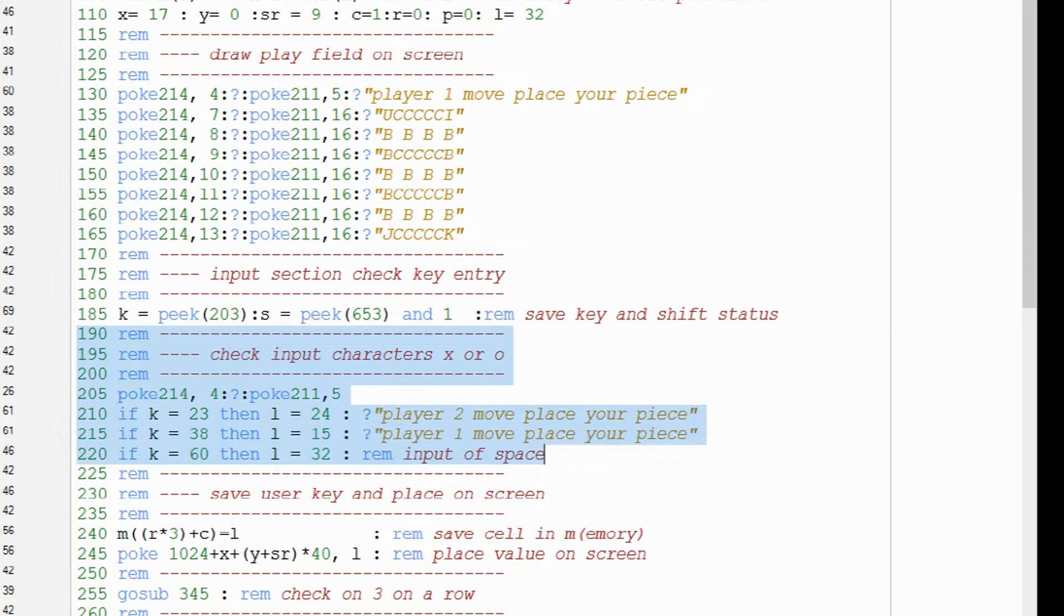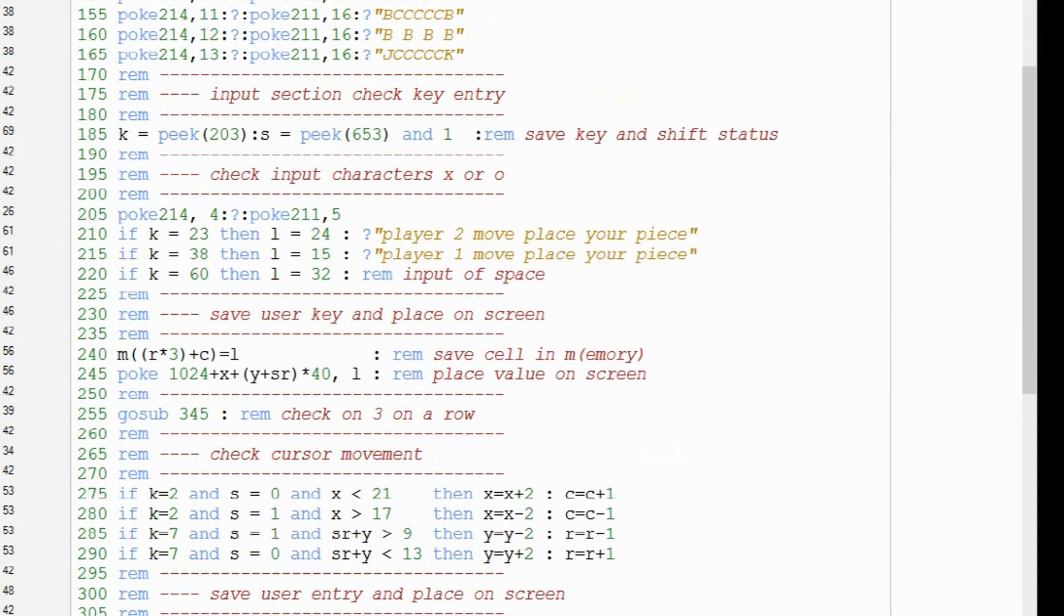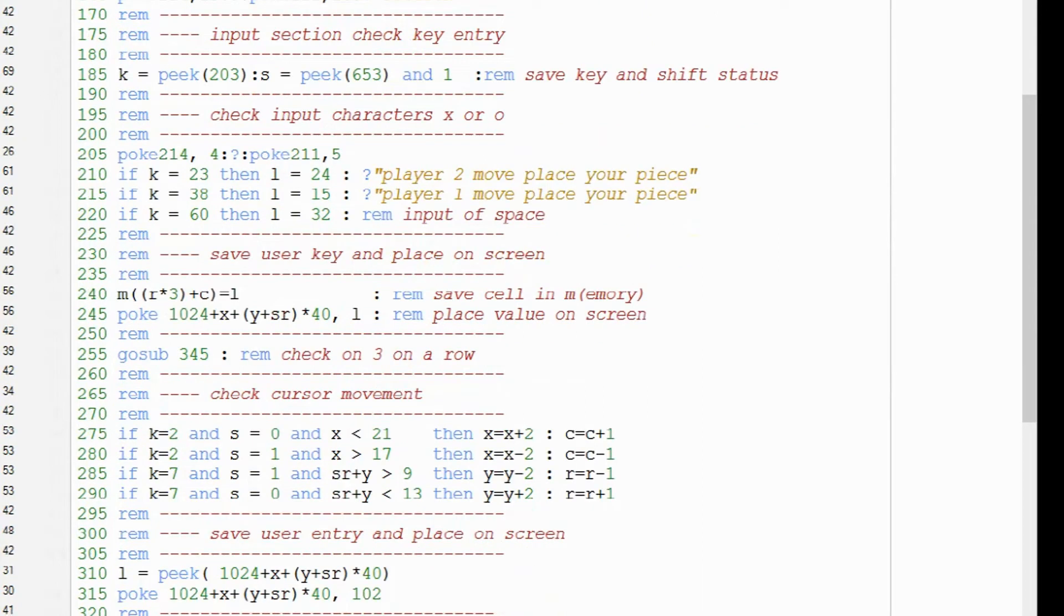With this part of the code, we validate if the key pressed is an X, or if the key pressed is an O. The second function of this part of the code is to display which user is next to press a key.